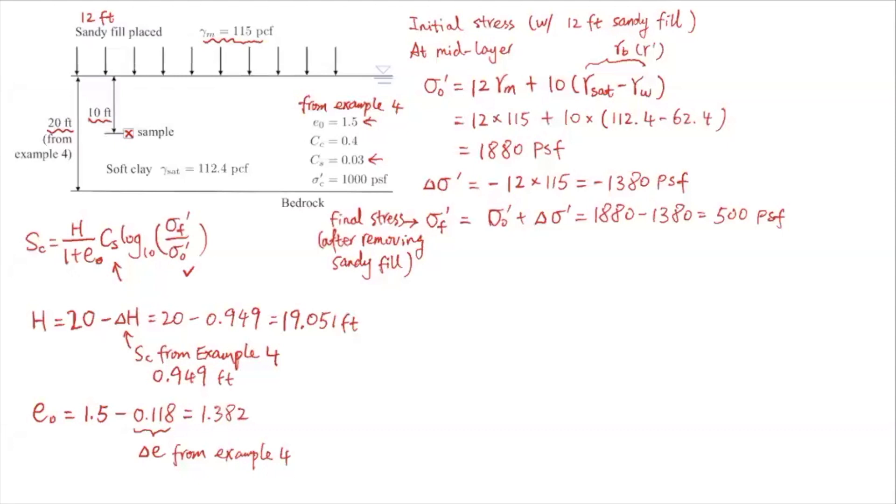Again, if you just want a quick calculation, you can simply use 20 for H and 1.4 for e₀, and the final settlement will be very close. But to be very accurate, we can account for these changes when doing this rebounding calculation. So with these values, then the new Sc...